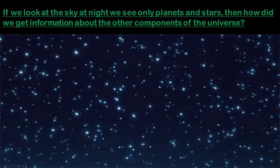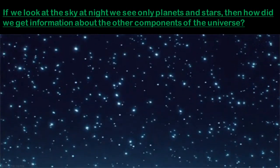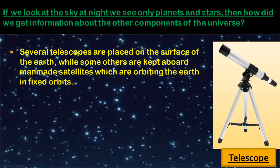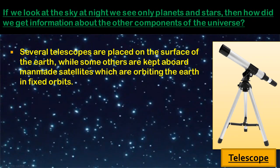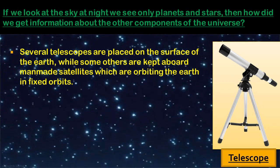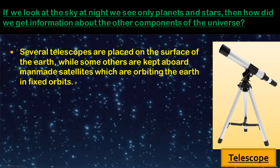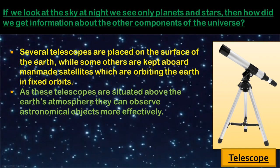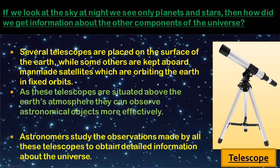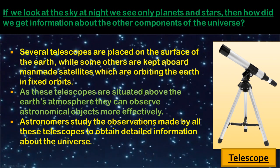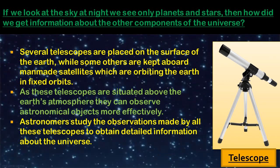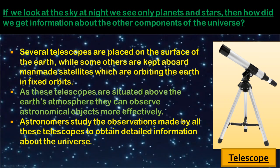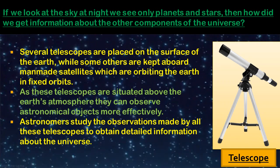If we look at the sky at night we see only planets and stars — so how do we get information about other components of the universe? The answer is telescopes. Several telescopes are placed on the surface of the Earth, while others are kept aboard man-made satellites orbiting the Earth. Since these telescopes are above the Earth's atmosphere, they can observe astronomical objects more effectively, and astronomers study their observations to obtain detailed information about the universe.